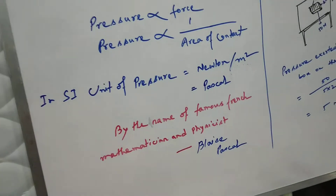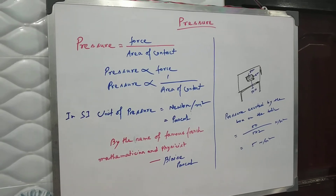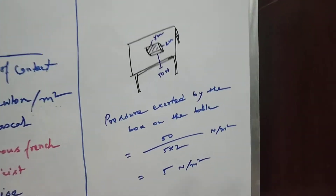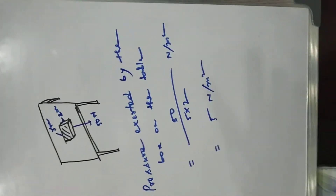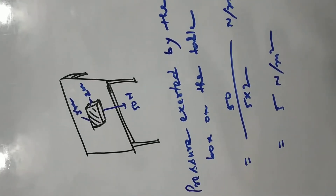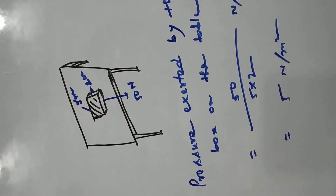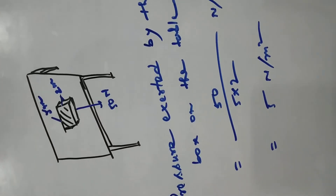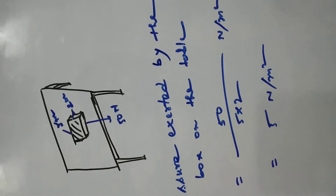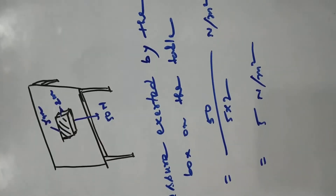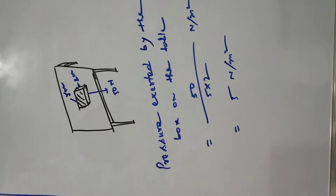Here is a box on a table. The length of the box is 5 meters and the breadth is 2 meters. The box is exerting a 50 newton force on the table. We need to calculate the pressure exerted by the box on the table.